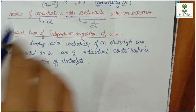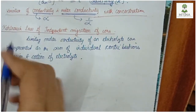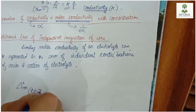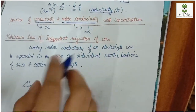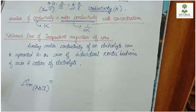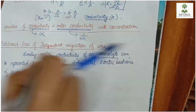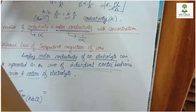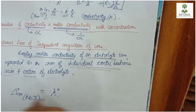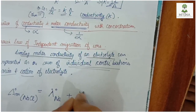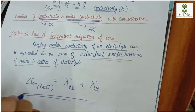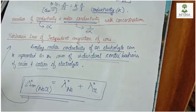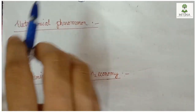Kohlrausch's law states the independent migration of ions and defines limiting molar conductivity. The limiting molar conductivity of an electrolyte is the sum of the individual limiting molar conductivities of its ions — for example, in sodium chloride, it is the sum of the contributions of sodium and chloride ions.